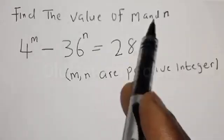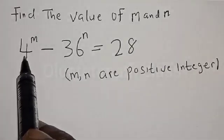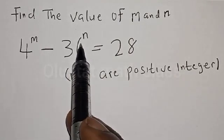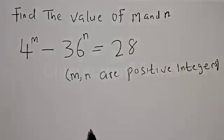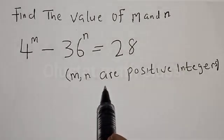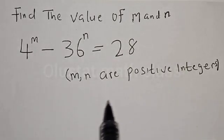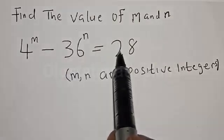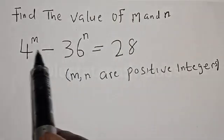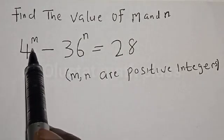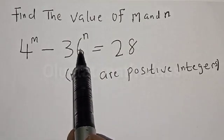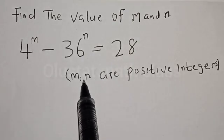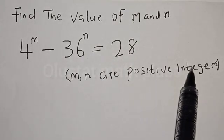Find the value of m and n, where 4 raised to power m minus 36 raised to power n is equal to 28, and m and n are positive integers.